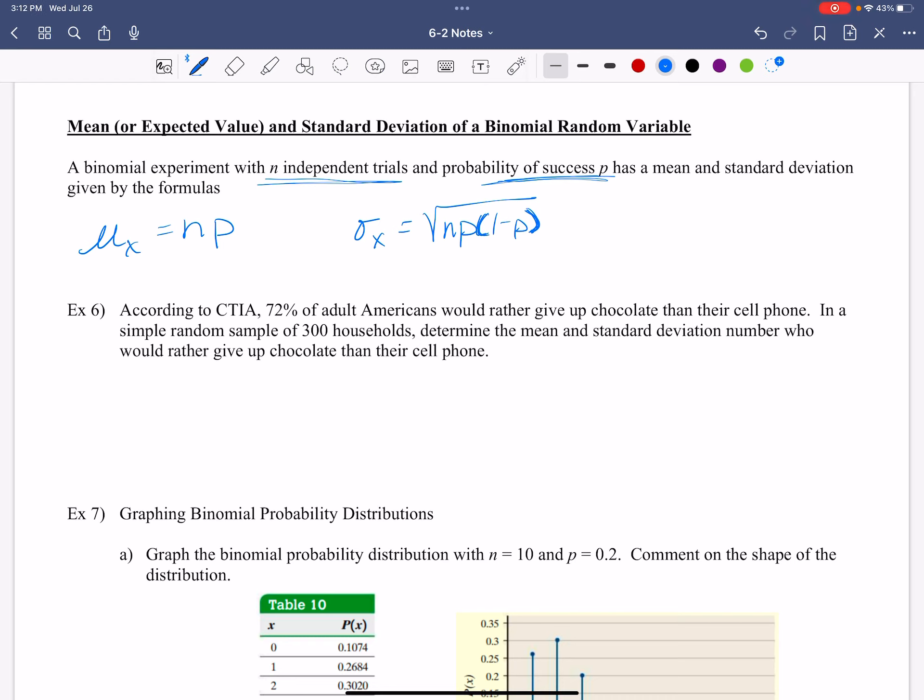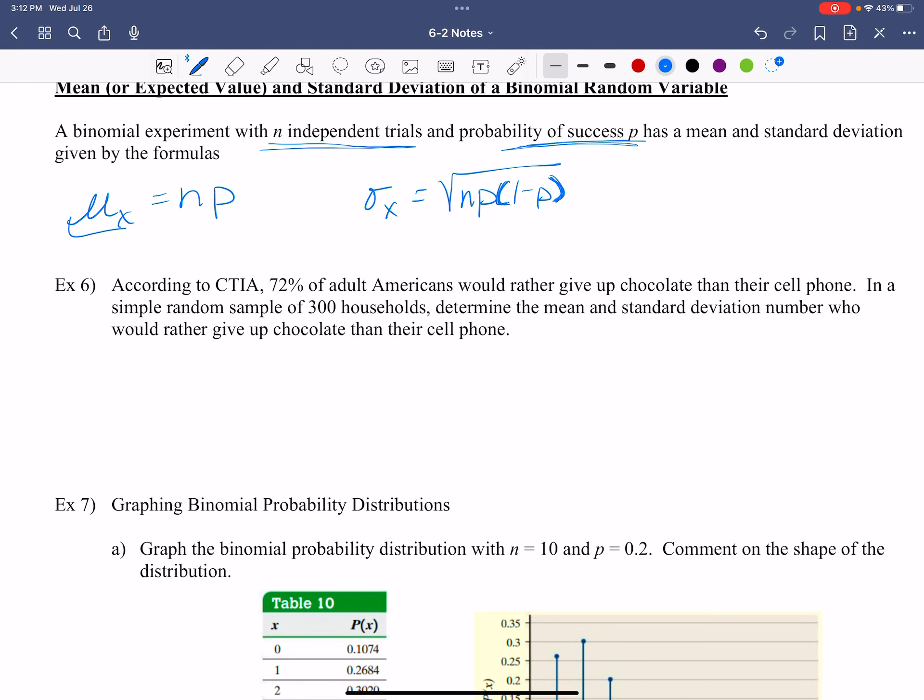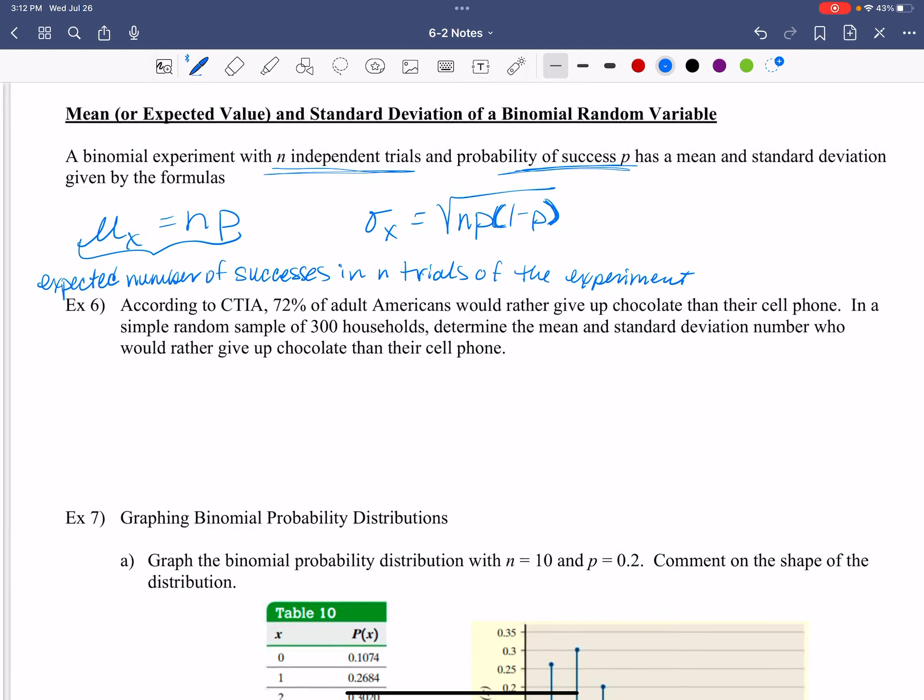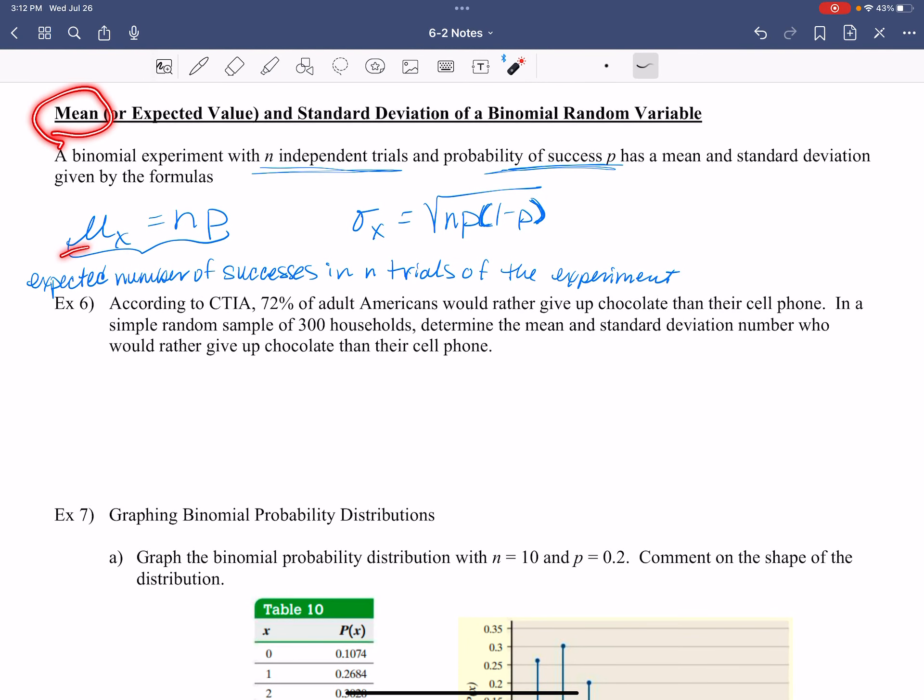So your mean is the same thing here as the expected value. And I'm going to write it out. Is the expected number of successes in N trials of the experiment. Just because I want to make sure that you get the concept of the mean is the same thing as the expected value. So this expected is the same thing as the mean.